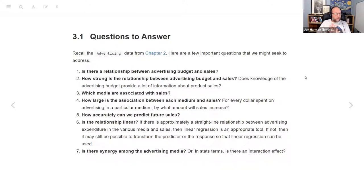We have a set of questions that this chapter is about answering. If we look at the advertising dataset that we saw in Chapter 2, there are a few questions we're going to try to understand. First off, is there a relationship between the advertising budget and sales? The sales would be the response variable, the various budgets are your predictors. How strong is the relationship between the budget and sales?